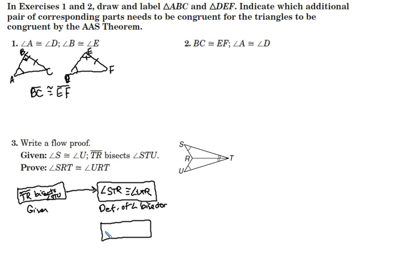We say that angle S is congruent to angle U. That is a given. And then it's not given, but another statement is this middle segment. It's working for both triangles.